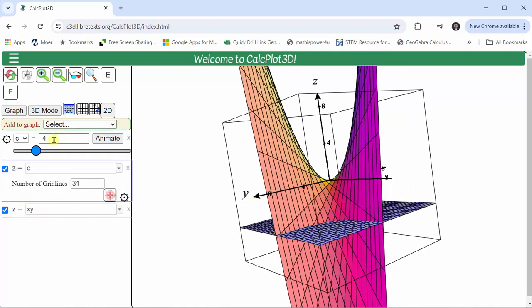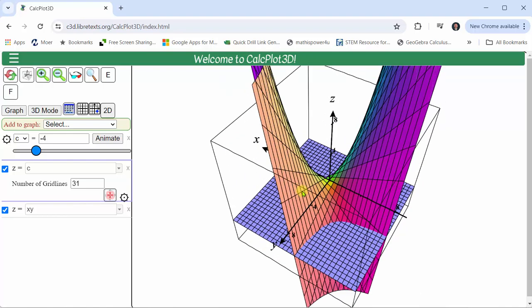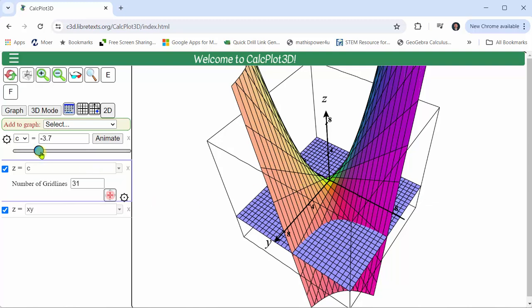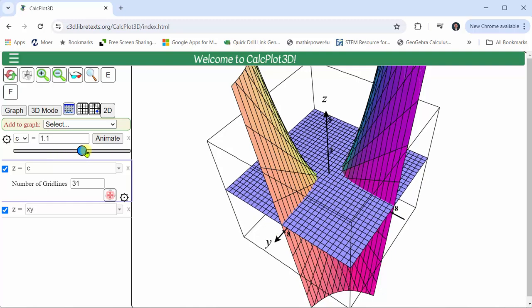Here's the graph of c equals negative 4. The intersection of the plane and the surface represent a level curve for the function. If you look down on the xy plane, notice the intersection appears to be a hyperbola. And now let's animate the plane. All these intersections represent level curves for the given function.